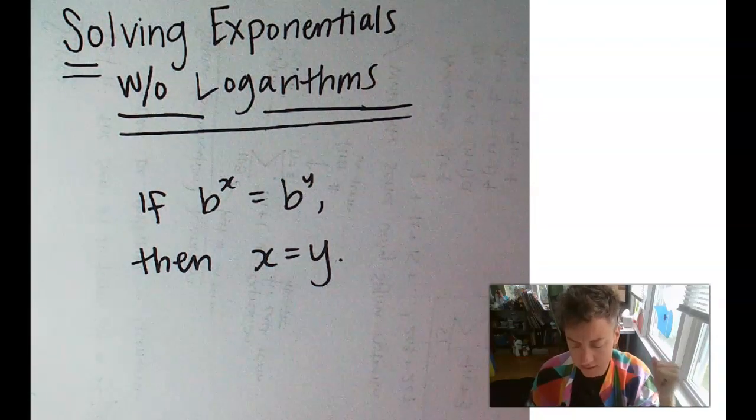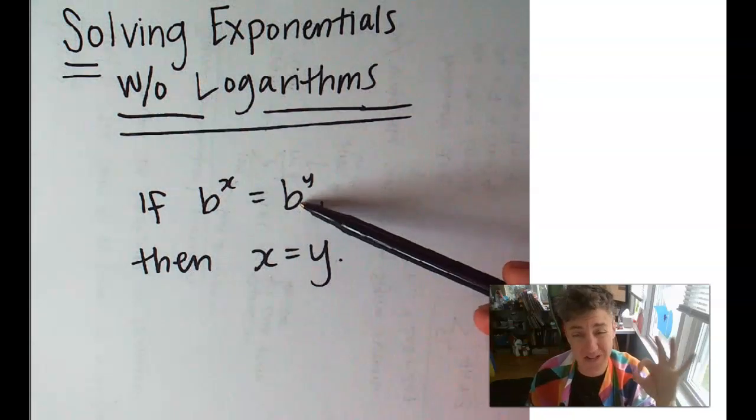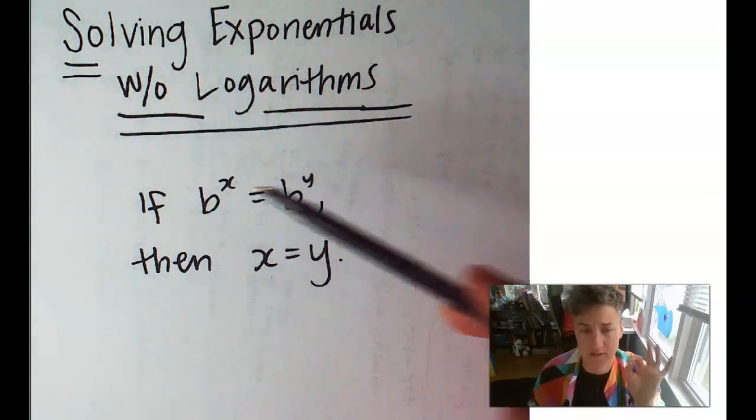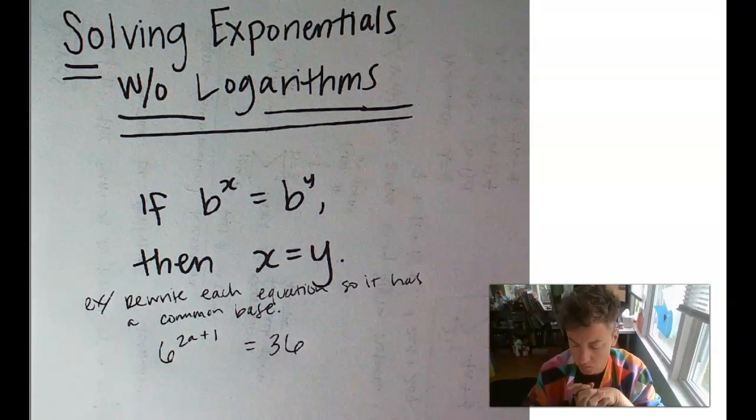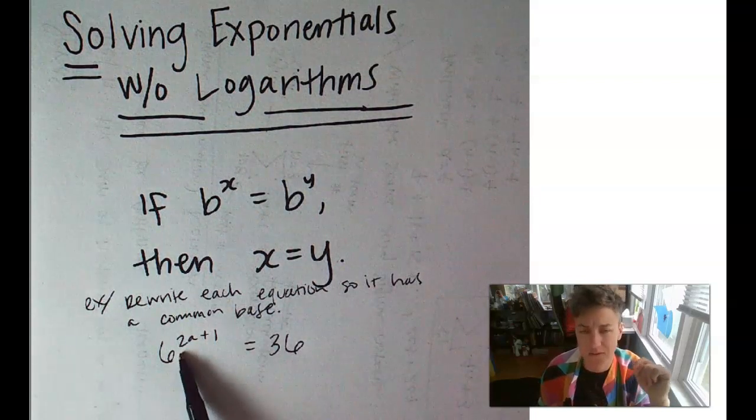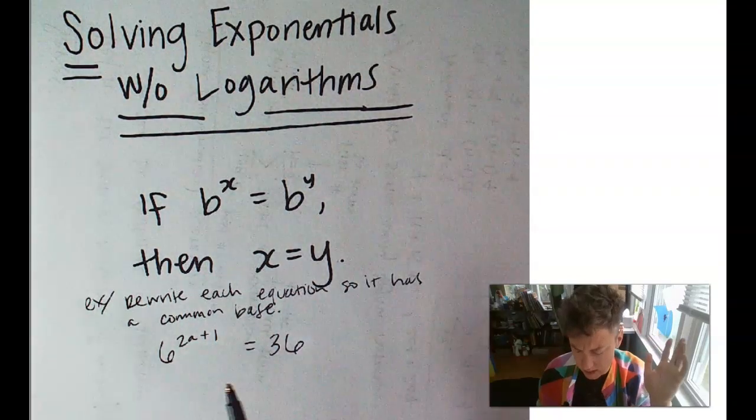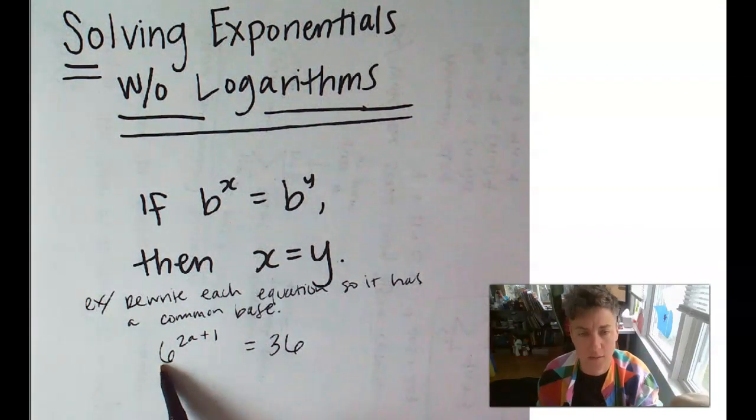Alright, let's start off with just getting the bases to be the same, because that's really the trick here. So, let's rewrite this 6 to the 2a plus 1 equals 36 as something that has the same base on both sides.